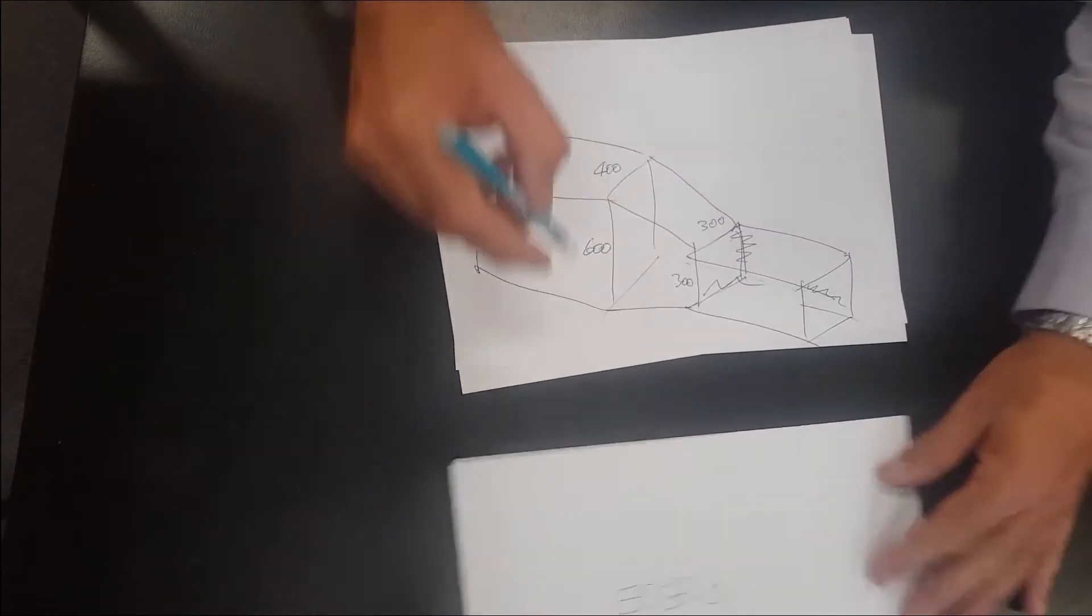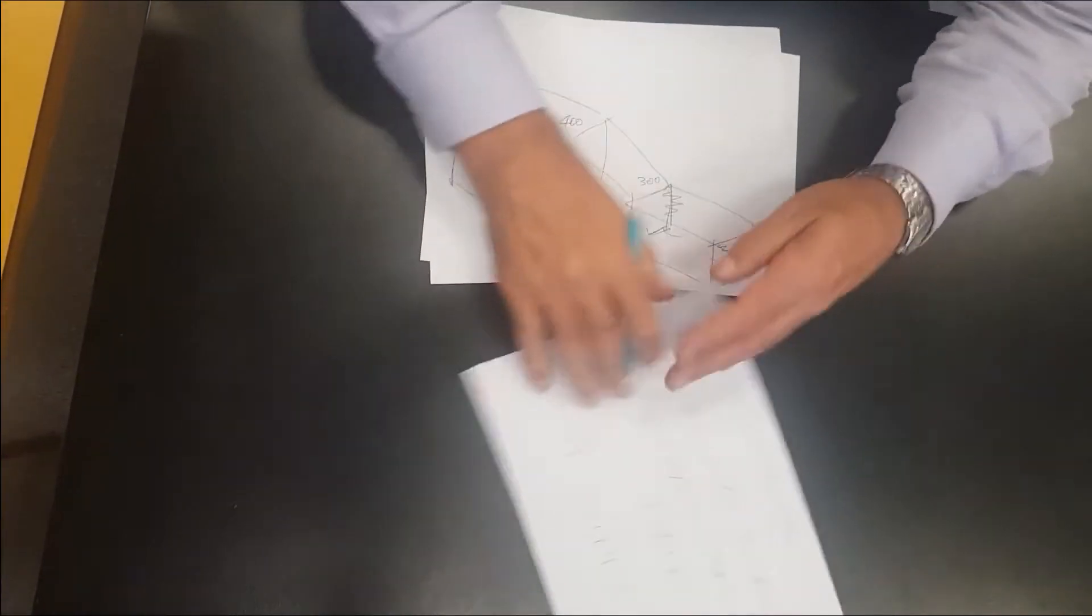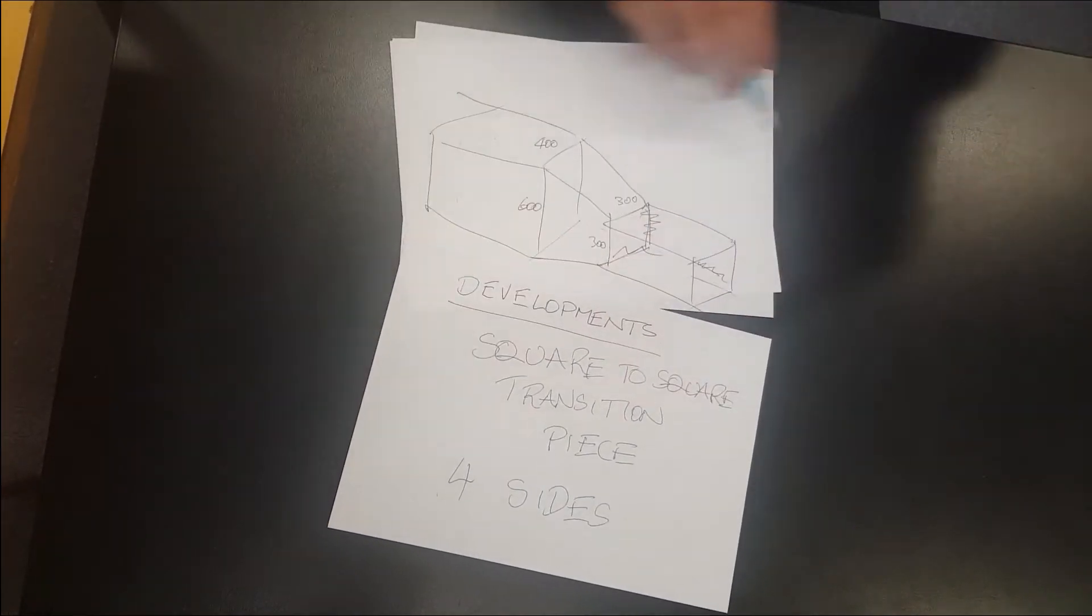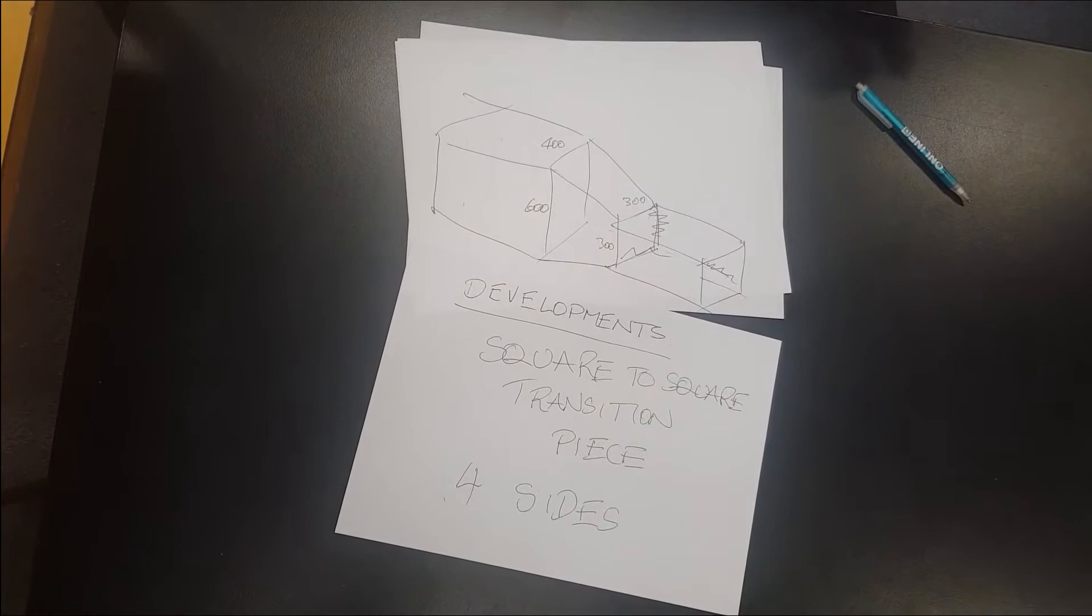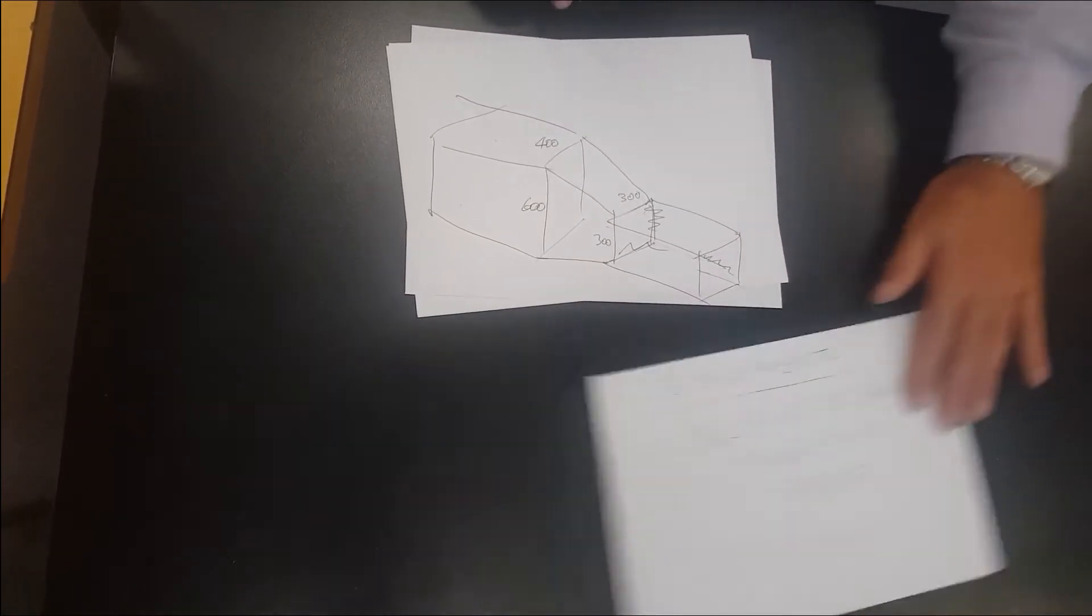So that's a square duct or rectangular duct to a square duct. Transition pieces only have four sides. They have no top, they have no bottom. They're just basically four sides of a duct as a transition piece. Make sense?